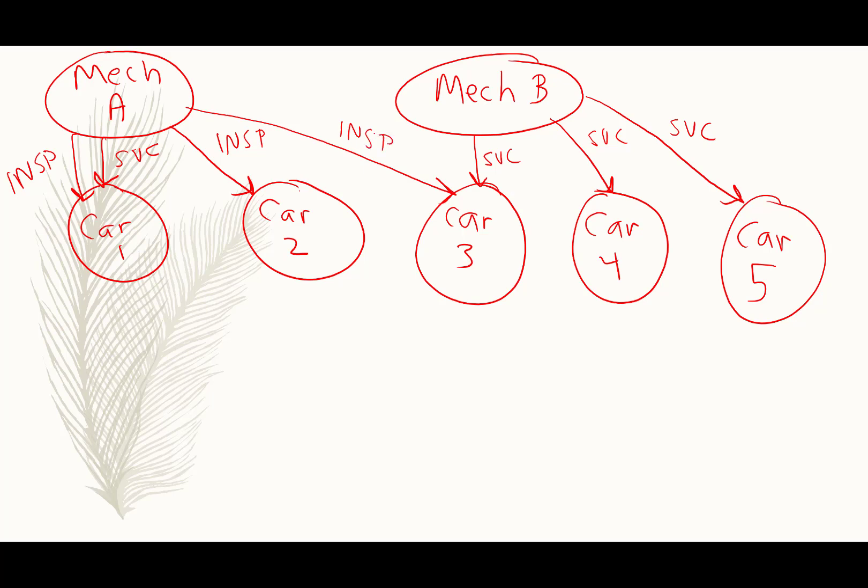So we have two kinds of nodes here, mechanics and cars. Well we wouldn't be much of a car shop without customers. So we may have some customers. This is customer Alice. This might be customer Bob. And this might be customer Chuck.